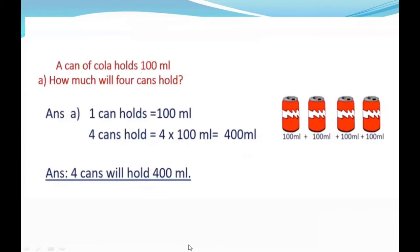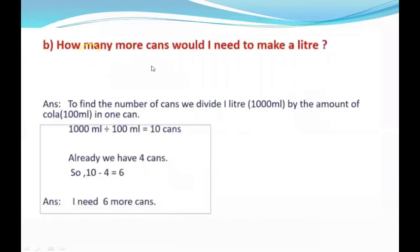Now look at the B part. The same question is related to this. Now, if they say, how many more cans would I need to make a liter? It is related with A. We already have four cans. How many more cans would I need to make one liter? To find the number of cans, we divide one liter—it means 1000 milliliters—by the amount of cola. One liter equals 1000 milliliters. How much does one can have? 100 milliliters in one can.